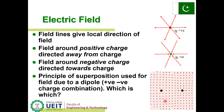Electric field lines give the local direction of the field. If the test charge is positive, the field is positive. The field around a positive charge is directed away from the charge, and the field around a negative charge is directed towards the charge. The principle of superposition applies to the field due to a dipole, which is a positive and negative charge combination.